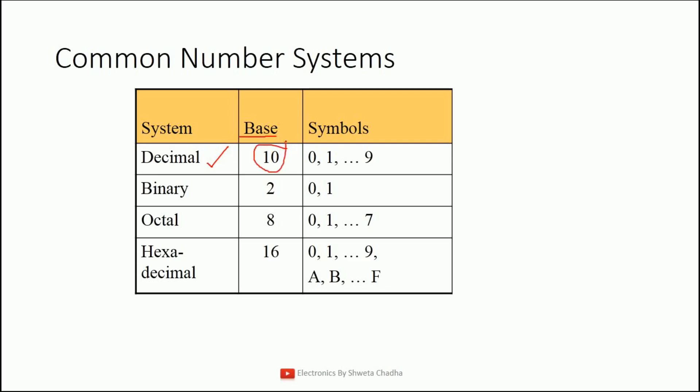Next is the binary number system. In the binary number system, only 0 and 1 is allowed. Hence, the base of the binary number system is 2.